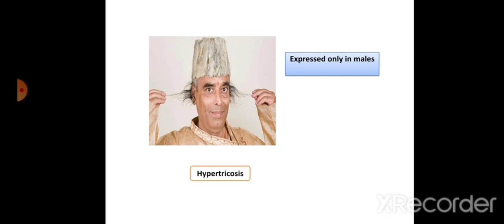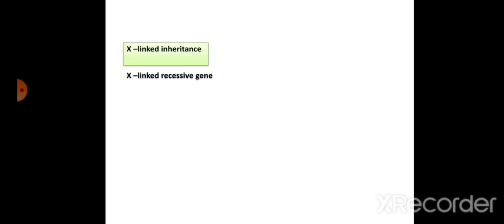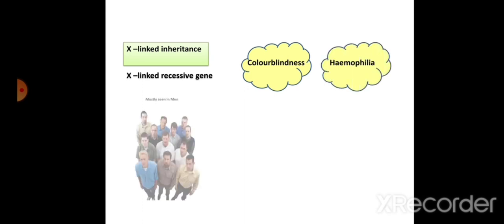The best example of Y-linked inheritance is hypertrichosis — excess hair on the external pinna — which is expressed only in males. X-linked inheritance is a type of inheritance where the gene is present on the X chromosome. The best examples are color blindness and hemophilia.